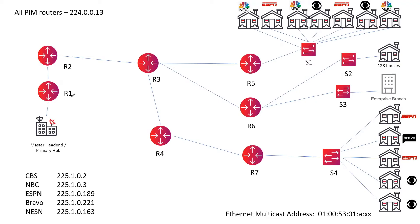Multicast is sort of backwards from that. The root of the tree is the source of the traffic, and it's sending traffic out to whatever destinations want the traffic. It still needs to send it out loop-free, obviously, but the root is the source and the leaves are the destinations. So it's sort of backwards from normal routing.